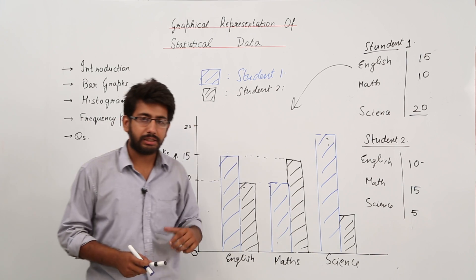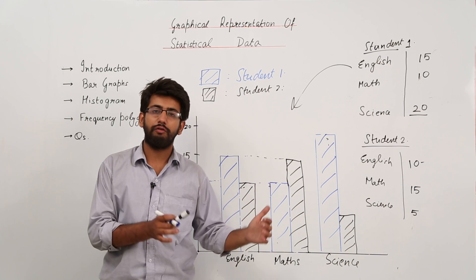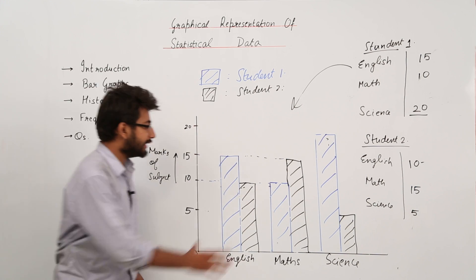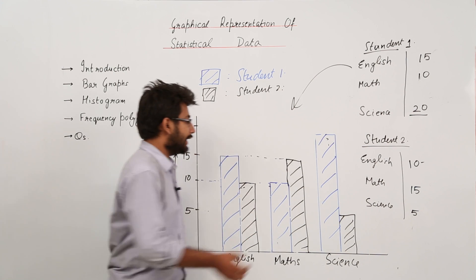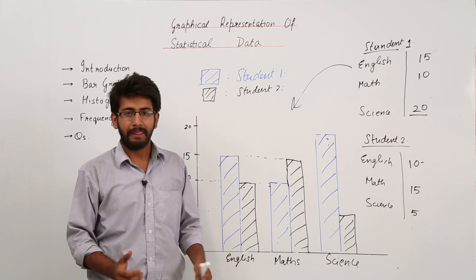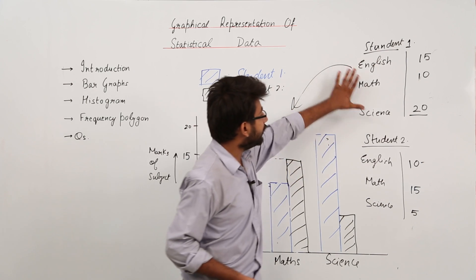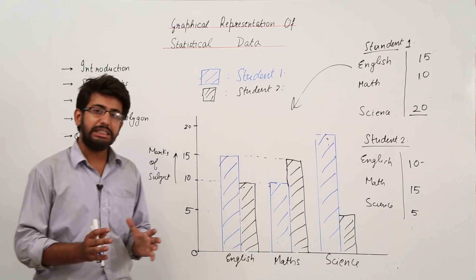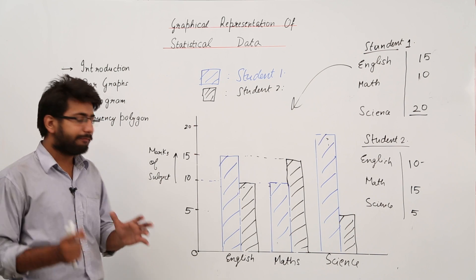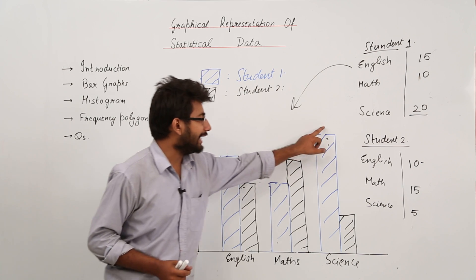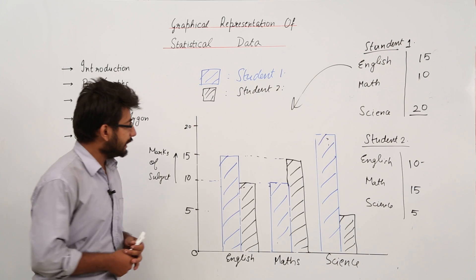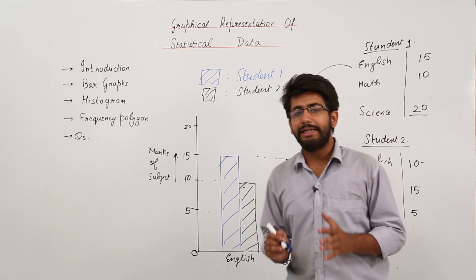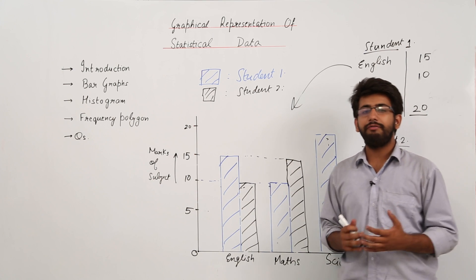If you want to compare three students, you make three bars per subject group. The first set represents marks in English, the second set in Math, and the third set in Science. Comparing this graphically is much more convenient than using tabular data — you can easily see that Student 1 is better in English and Science, while Student 2 is better in Math.